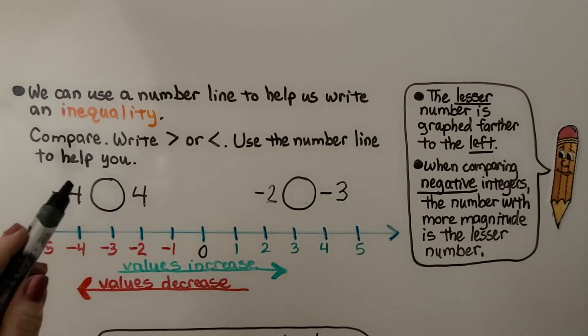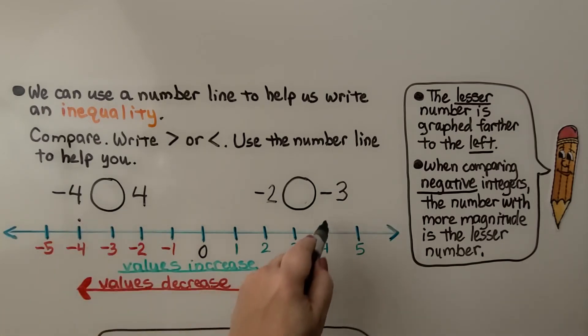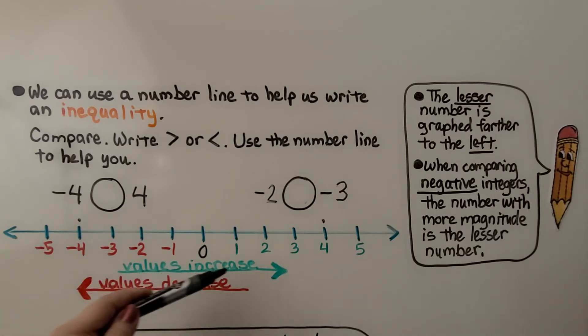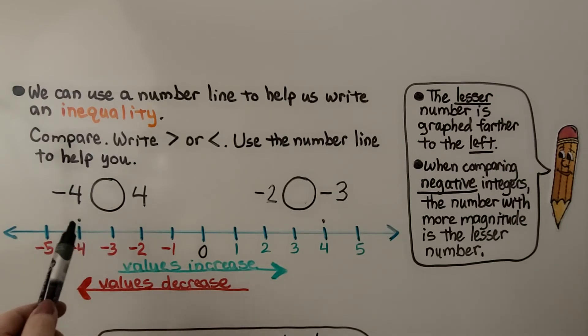Here we have negative 4. That's right here. And we have a positive 4. That's right here. And if you remember from the previous lessons, our values increase as we head to the right and our values decrease as we head to the left. So this must be the lesser number. Negative 4 is less than 4.